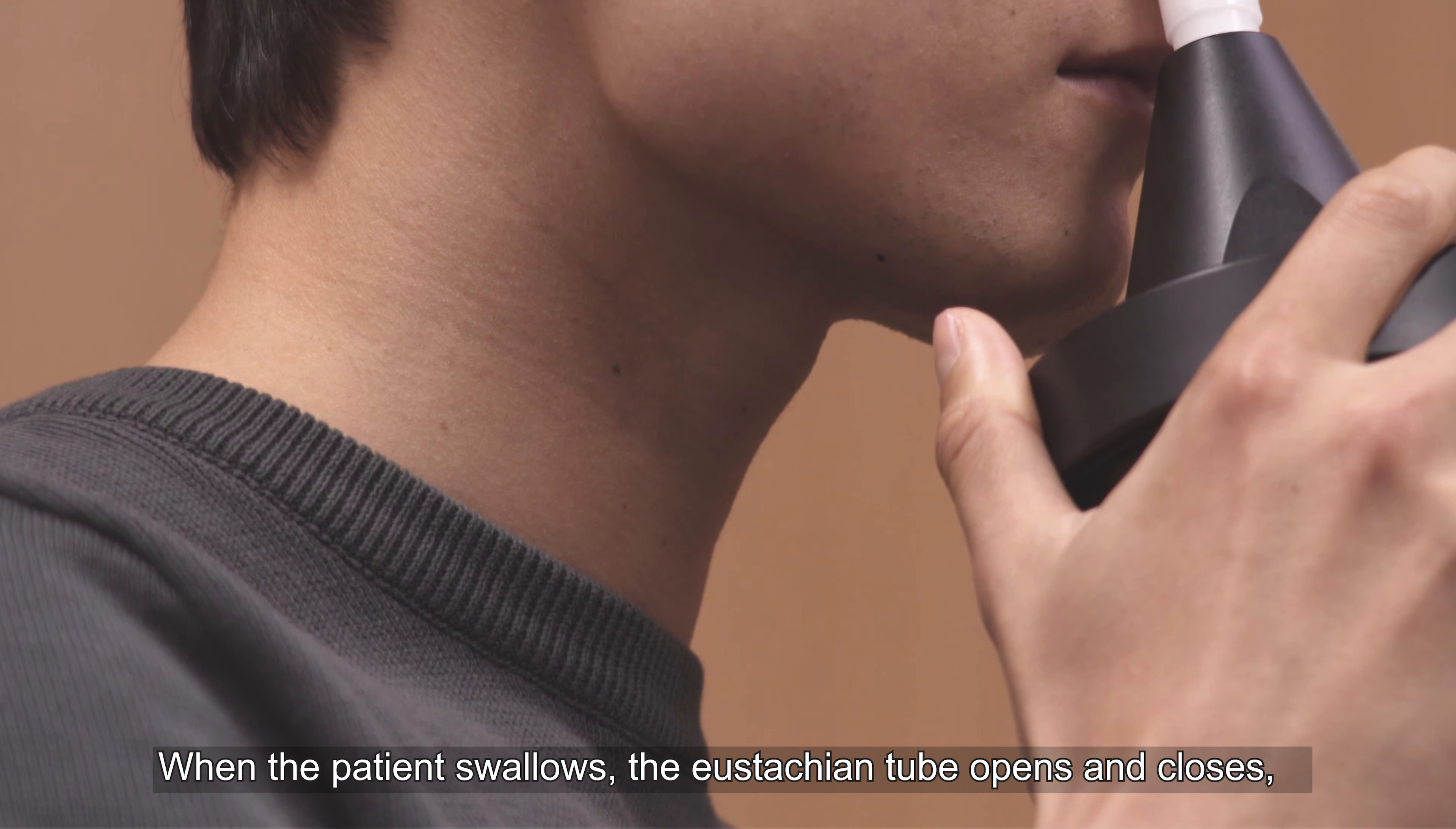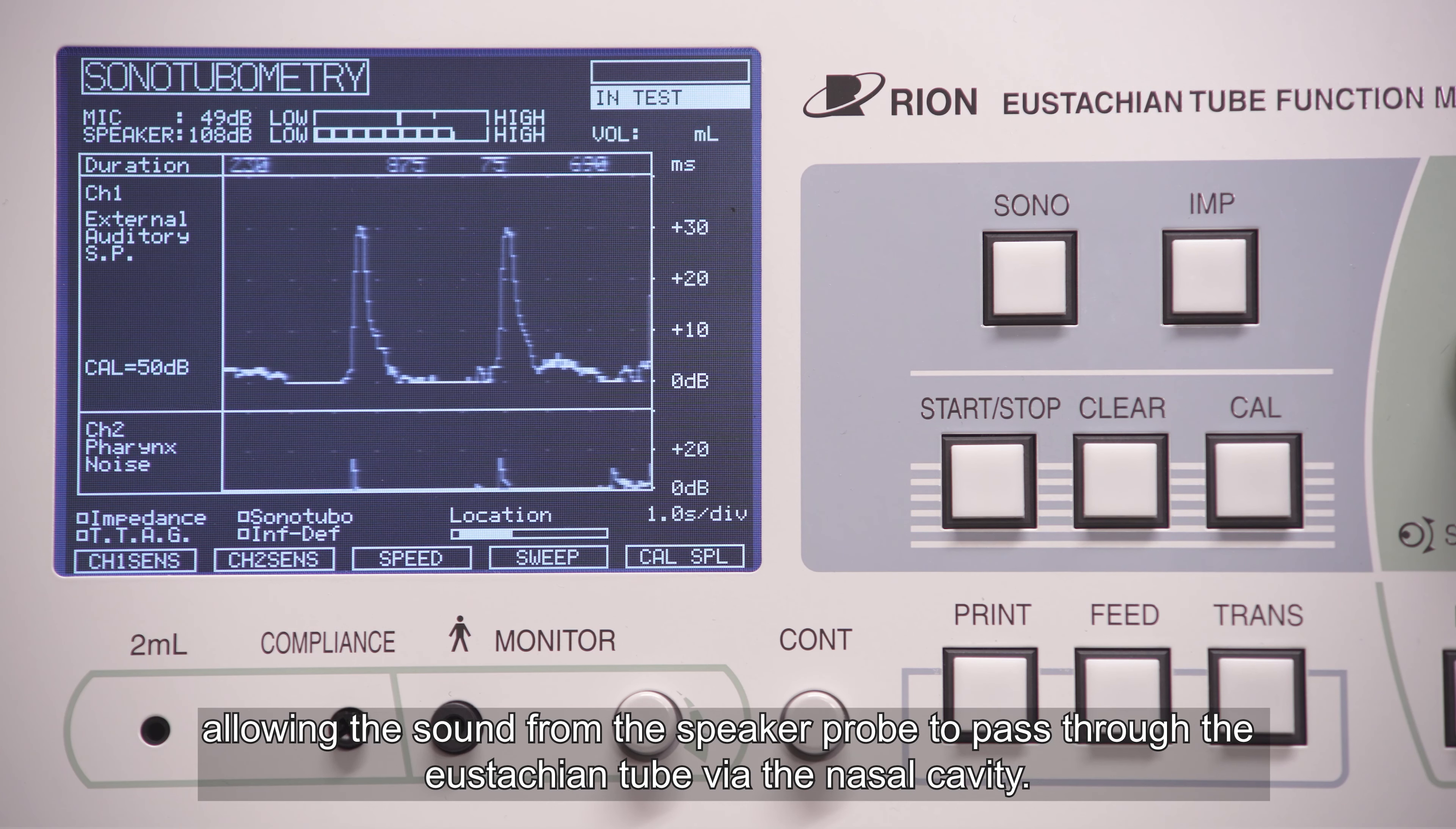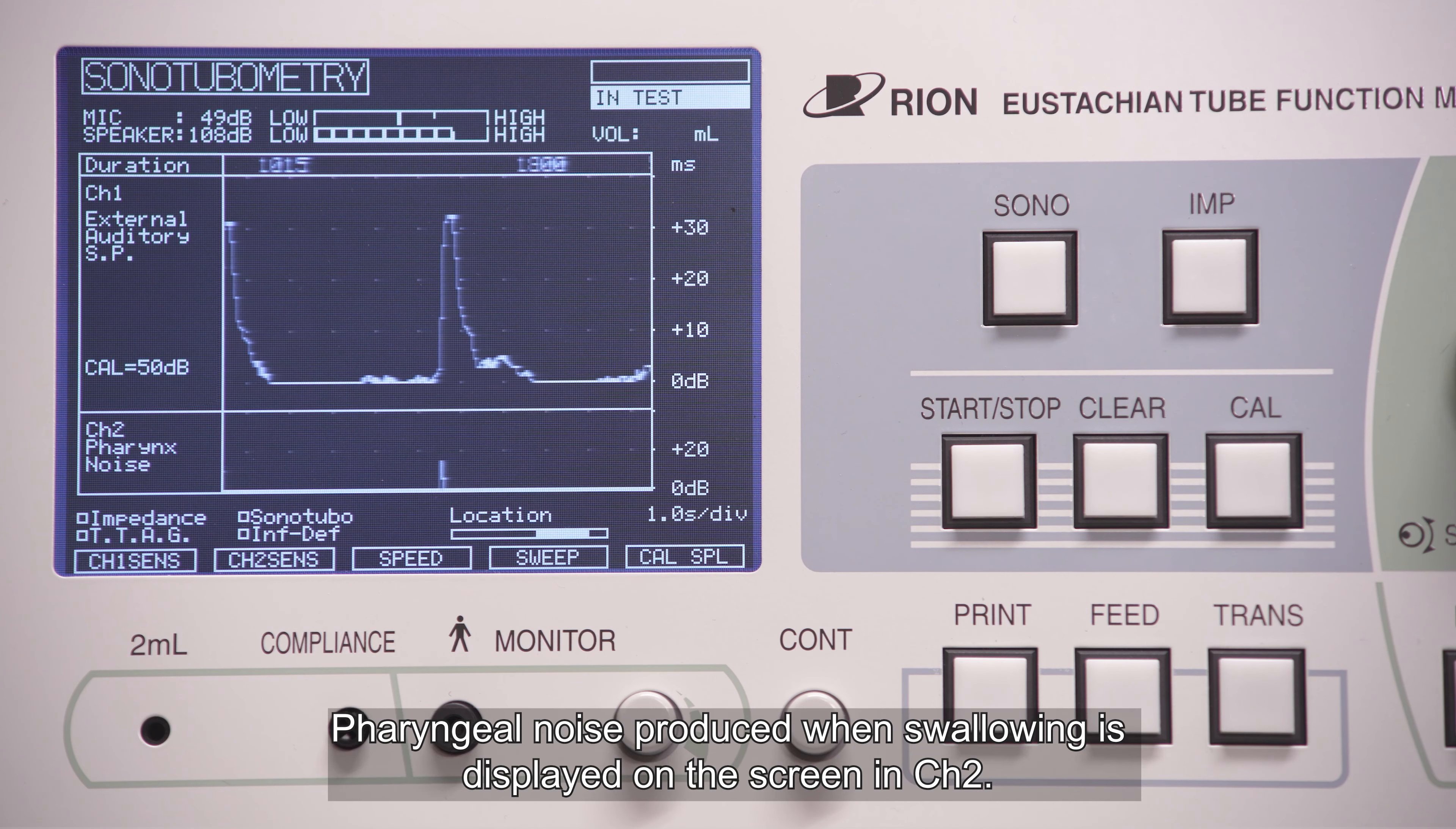When the patient swallows, the eustachian tube opens and closes, allowing sound from the speaker probe to pass through the eustachian tube via the nasal cavity. This sound is detected as a pressure level by the sonotubometry probe's microphone and is displayed on the screen in channel 1. Pharyngeal noise produced when swallowing is displayed on the screen in channel 2.